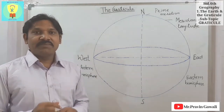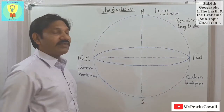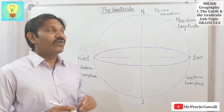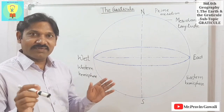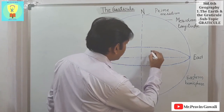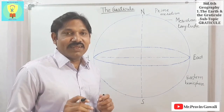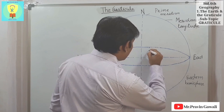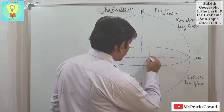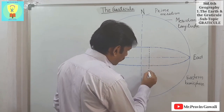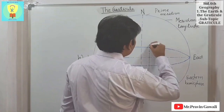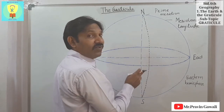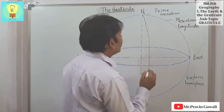Now I will draw the meridians of longitude as well as some parallels of latitude. Watch the activity carefully — it will help us understand the graticule. I am drawing it roughly so you can understand it.